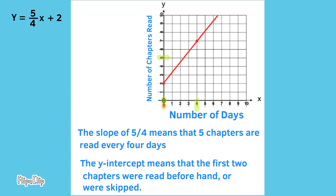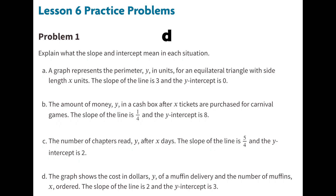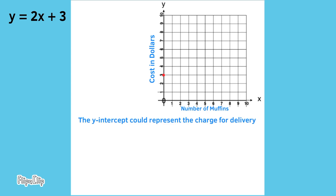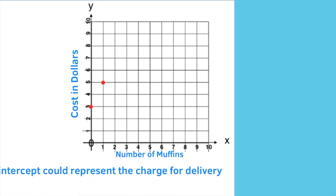Part D: The graph shows the cost in dollars y of a muffin delivery and the number of muffins x ordered. The slope of the line is 2 and the y-intercept is 3. I wrote the equation y = 2x + 3 to represent this situation. The x-axis represents number of muffins and the y-axis represents cost in dollars. The y-intercept could represent the delivery charge.